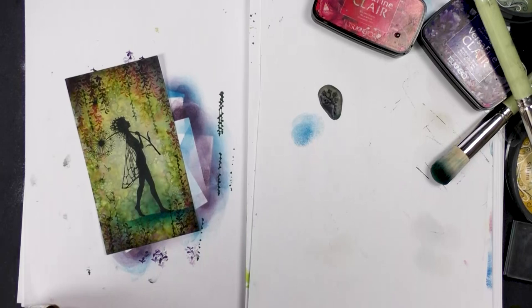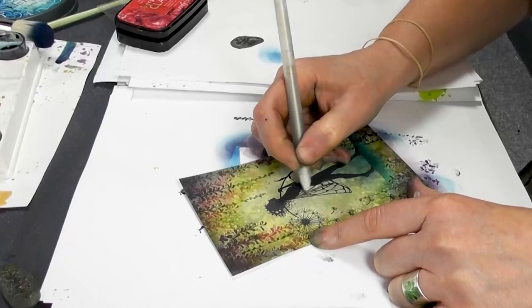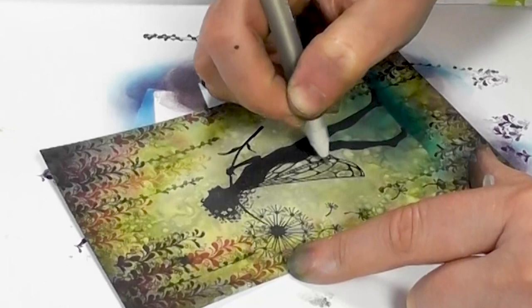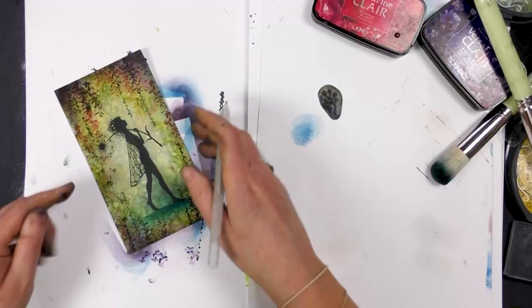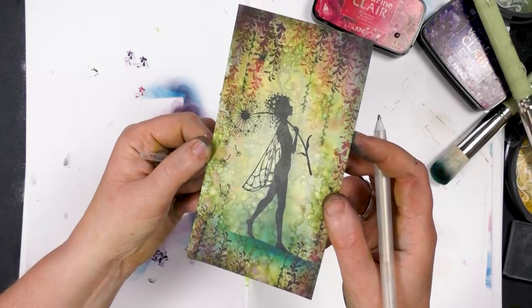I've got one of our Secura gel pens here. This is a glitter one. And I'm just going over her wings. I don't know if you can see that there. And that really does pull the wings out. Just that little bit of subtle glitter.